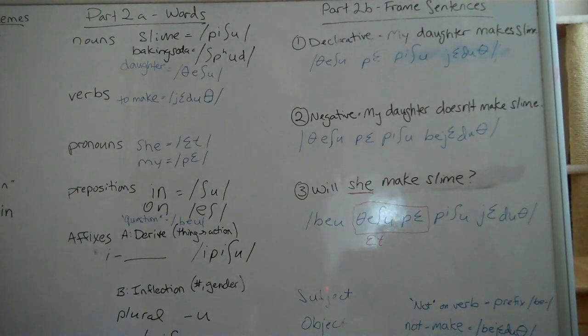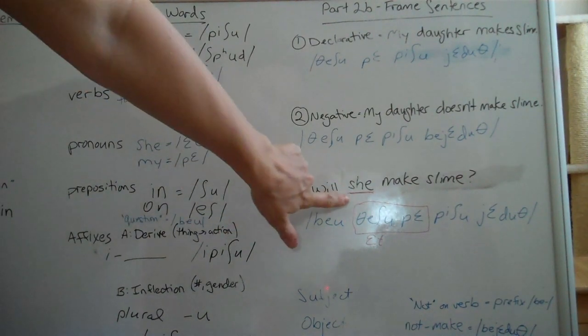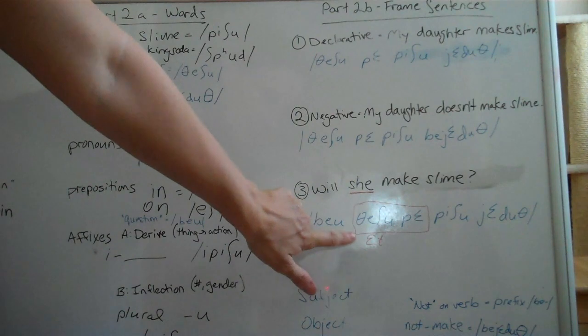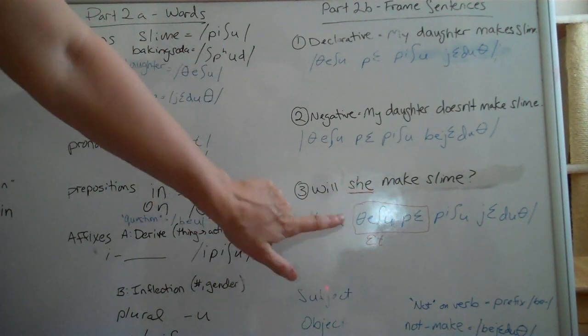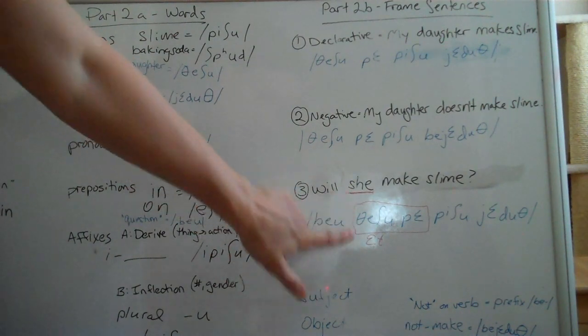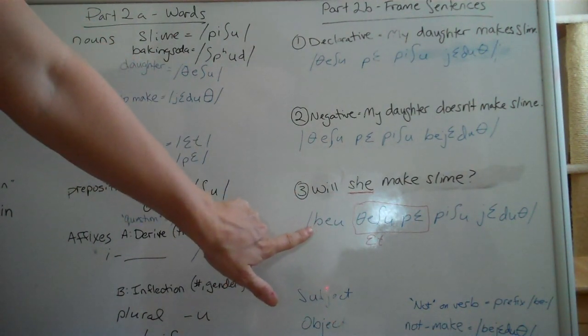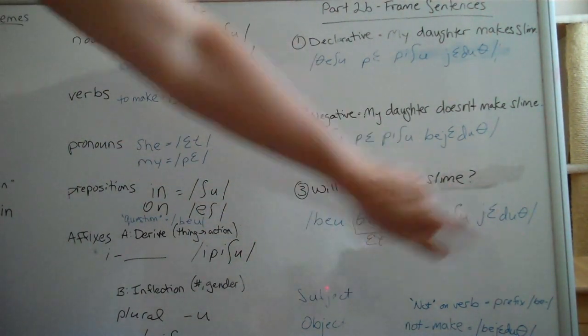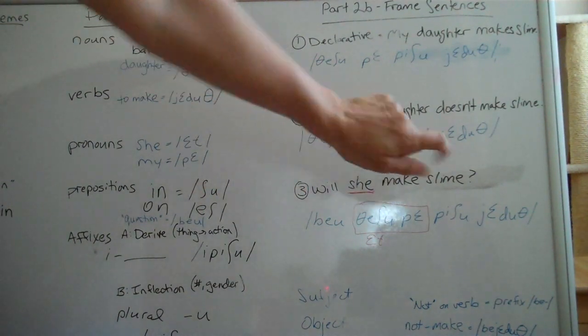Hi, everyone. I wanted to fix a mistake I noticed for the third sentence. I changed to she rather than my daughter. And so, this segment, Feishu, Pe, should actually be, is my daughter, should actually be et, et. So, Beyu, et, Peishu jeduth is how we would say, will she make slime?